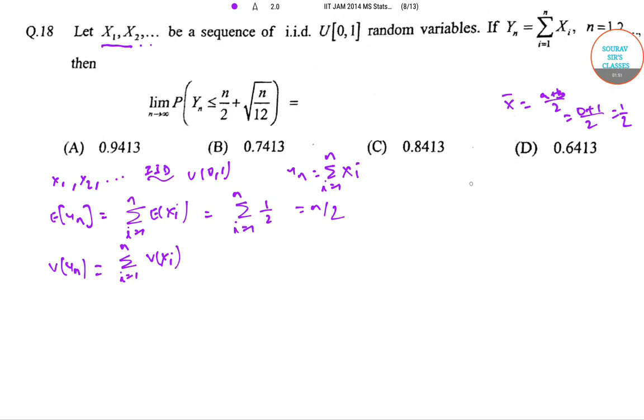That variance of X equals (b-a)²/12 for a uniform random variable. So this is (1-0)²/12 = 1/12. So summation i=1 to n of 1/12, we get this as n/12.